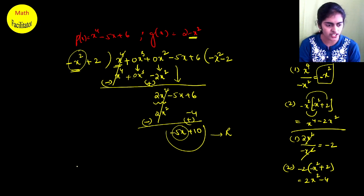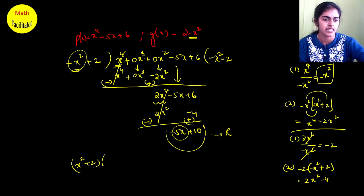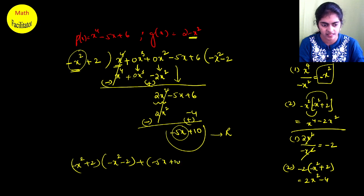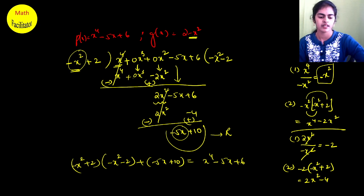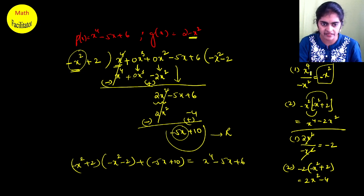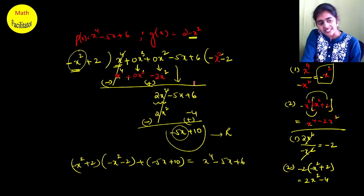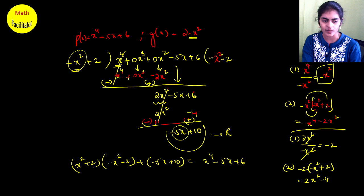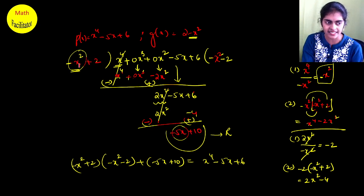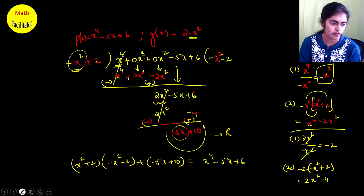To verify: divisor times quotient plus remainder should give you back your dividend. So the division algorithm uses just two simple repeating steps: first, divide the first term of the current dividend by the first term of the divisor to get the next quotient term; second, multiply that quotient term by the entire divisor and subtract. Repeat until the degree of the remainder is less than the degree of the divisor.